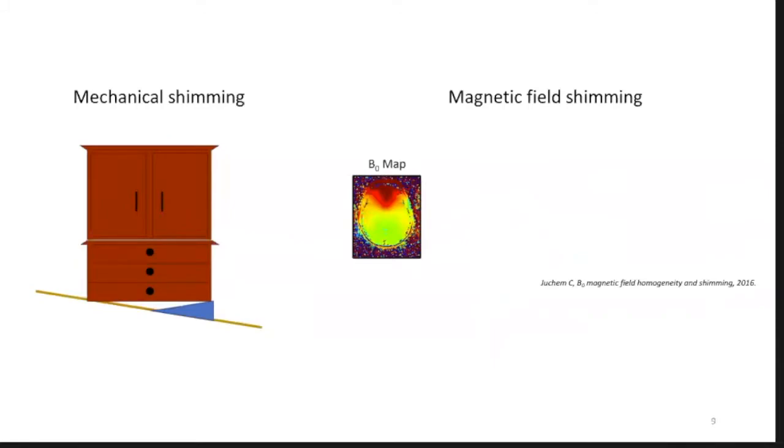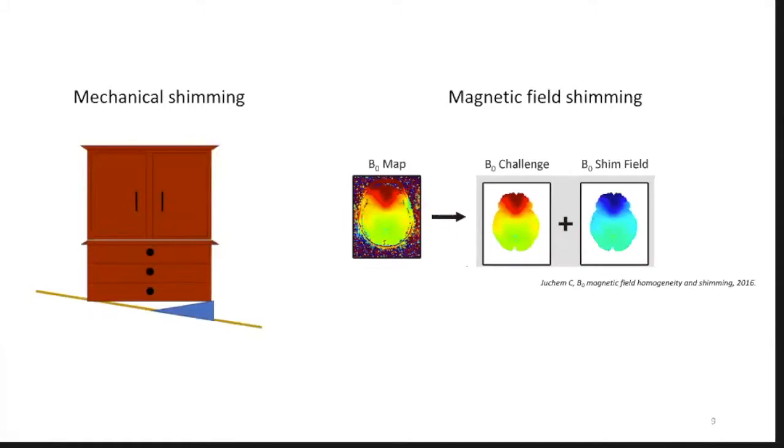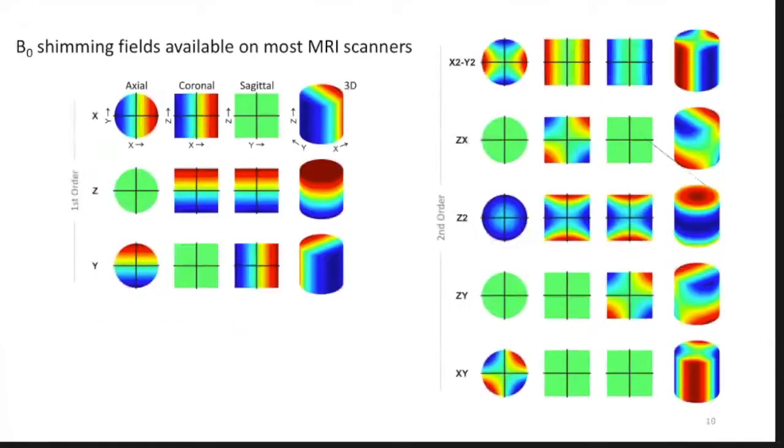It's the same thing in the body. The air tissue interface in the sinuses creates this very characteristic off-resonance hot spot in the frontal lobes, which is a very interesting area for neuroscience. So you have a B0 challenge. You then try to generate a compensating magnetic field that'll cancel out that B0 challenge and give you a flat magnetic field. So how do you do this? Well, you need coils to generate the fields. And in the scanner, there's already eight shim terms built in. You have the first order shims on the left and the second order shims on the right. The first orders are just your linear encoding gradients.